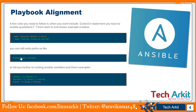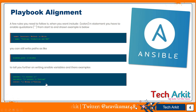You can also specify file paths in the playbook. For example, if you want to copy some data and specify a Windows path, you can do so. We will cover Ansible variables in the next class. There is a correct way and an incorrect way to write variable content — remember these rules whenever you are writing playbooks, as it is very important. Practice writing playbooks and you will understand how carefully you need to align them.